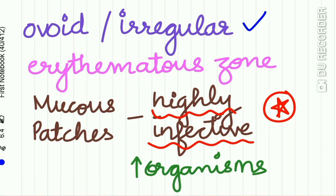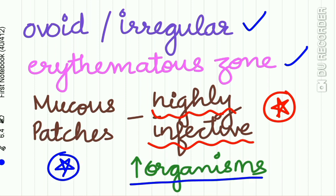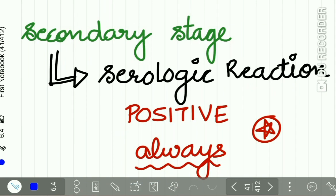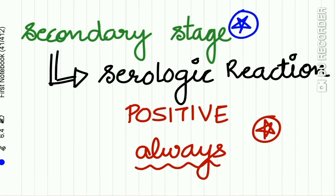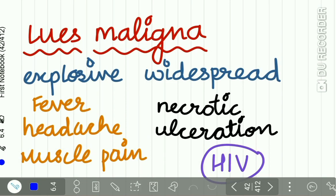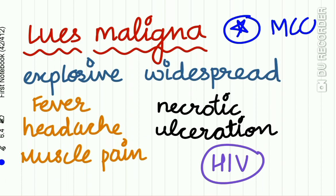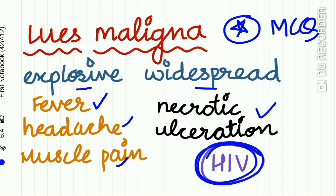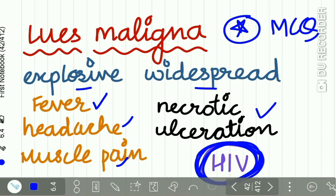These mucus patches are ovoid and irregular with an erythematous zone. Importantly, mucus patches are highly infective because they carry a high load of organisms. In the secondary stage of syphilis, the serologic test is always positive — another important MCQ point. Lues Magna is explosive widespread syphilis characterized by fever, headache, muscle pain, and necrotic ulceration, and is mostly found in HIV-infected patients.